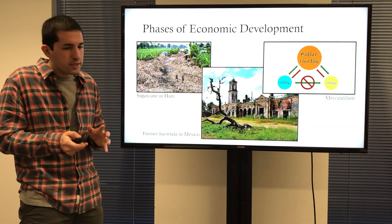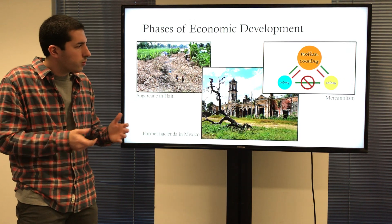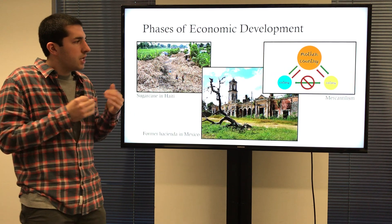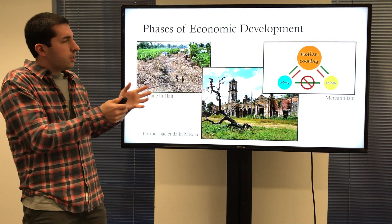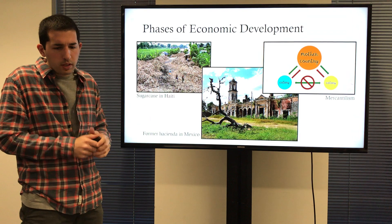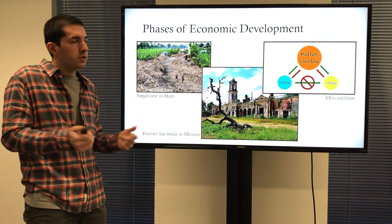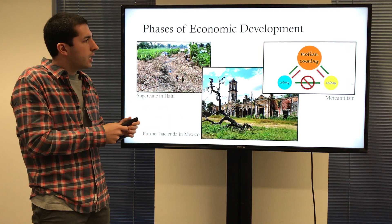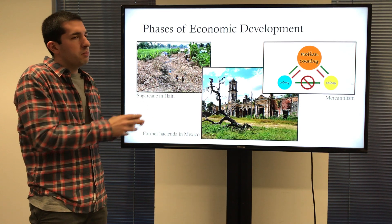There are many phases of economic development that hit the region that the book walks us through. To simplify it, the first stage would be mercantilism, illustrated by a mother country and different colonies. This would be a policy where a European country — the colonizer — would establish a colony. For instance, let's use the example of France. France is the mother country in this situation, with French Guiana and Haiti as their colonies.